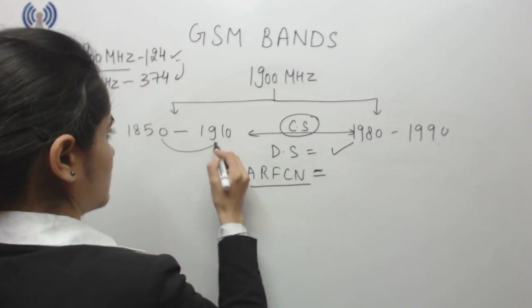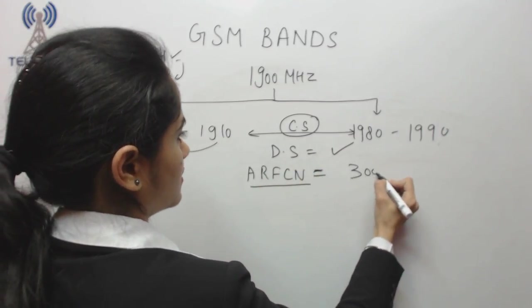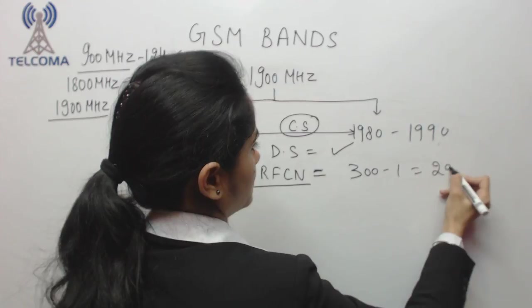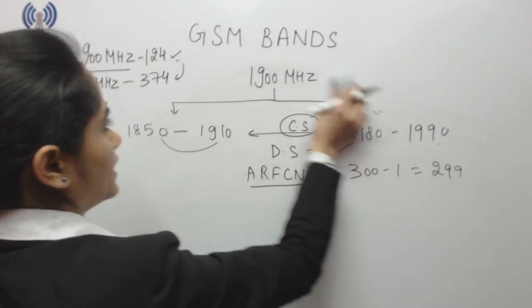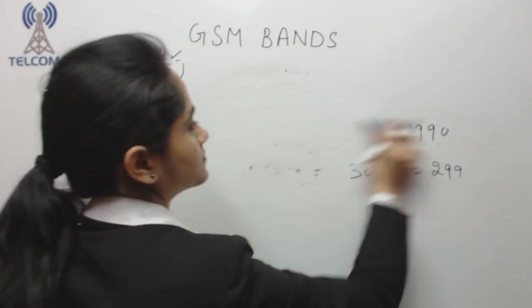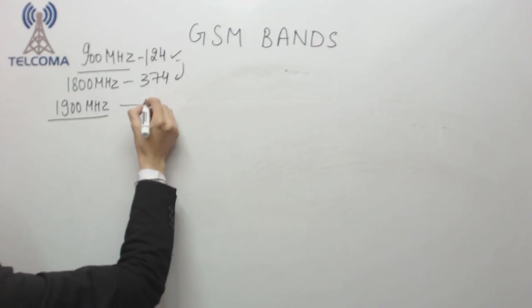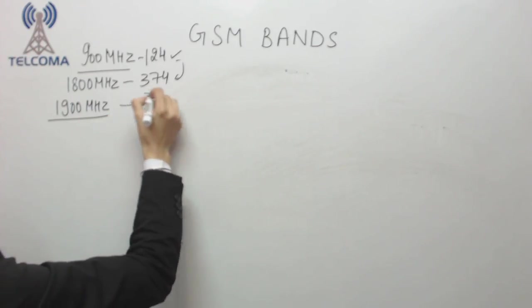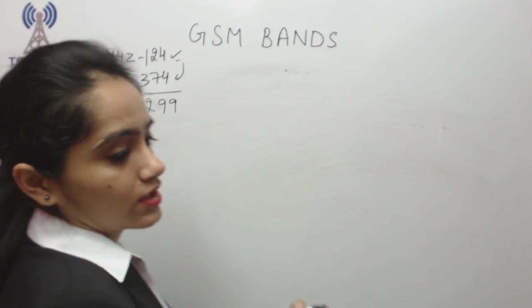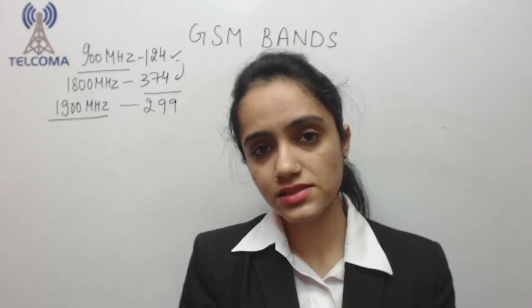We have a difference of 300 minus 1, which is 299. So here in this case we have total ARFCN as 299. If our 1800 megahertz capacity is fulfilled, then we need to go to the 1900 megahertz band.